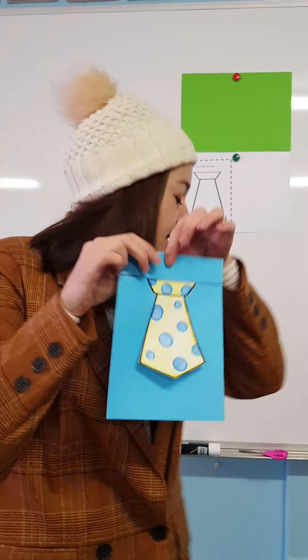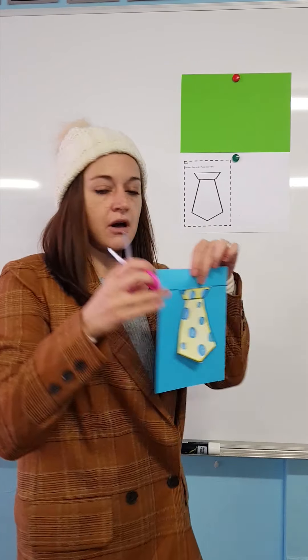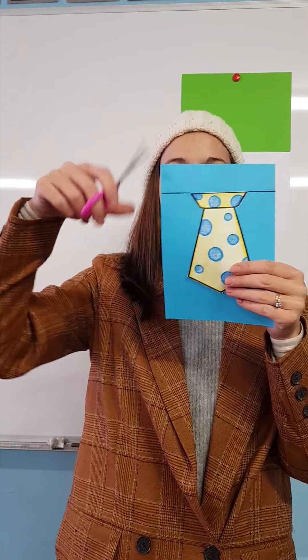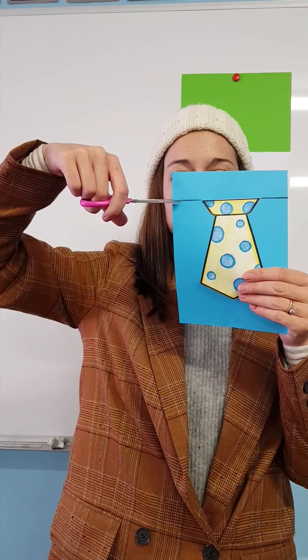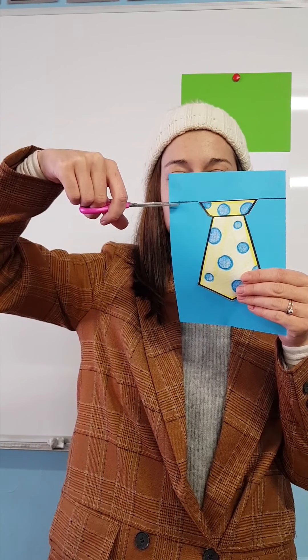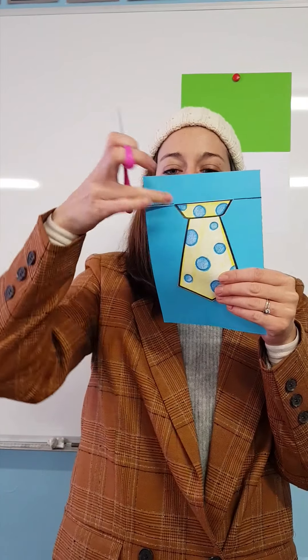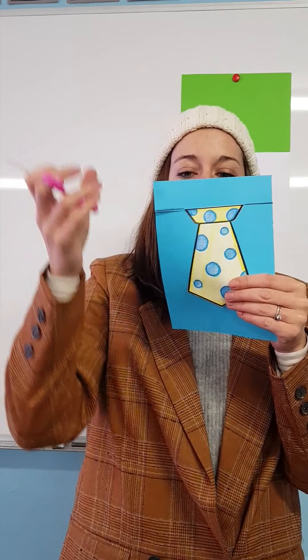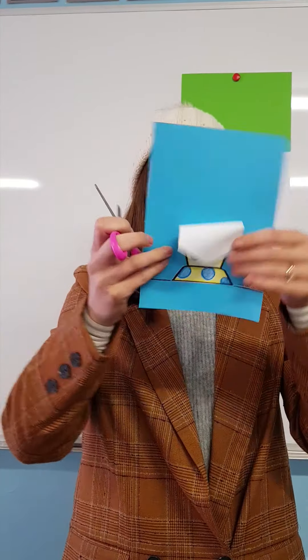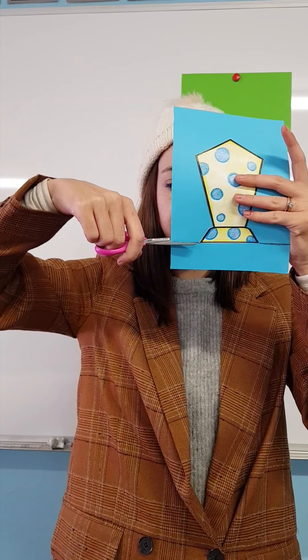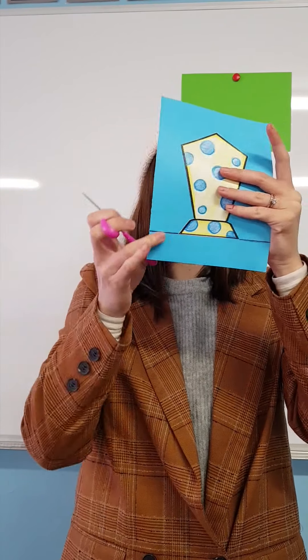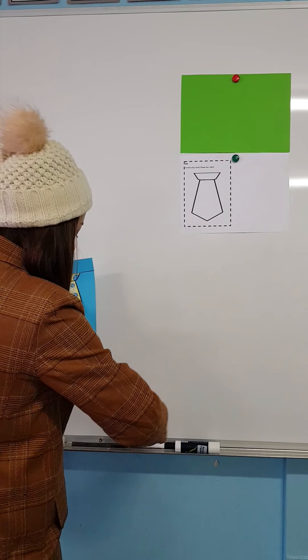Then you are going to cut on those two lines. So stop at the corner of your tie, and then the other side as well.